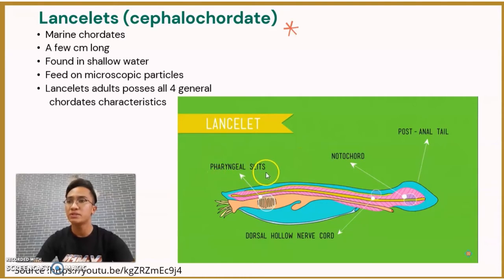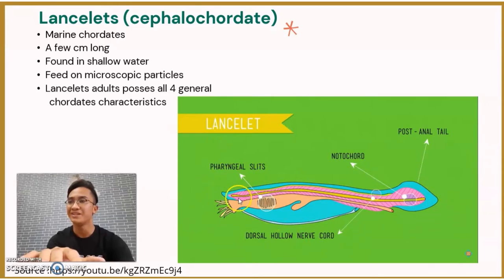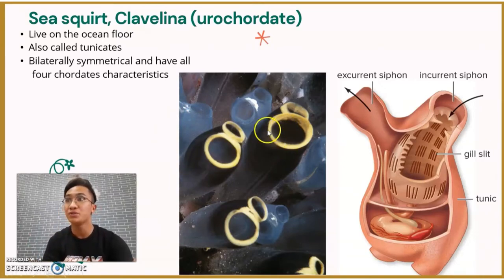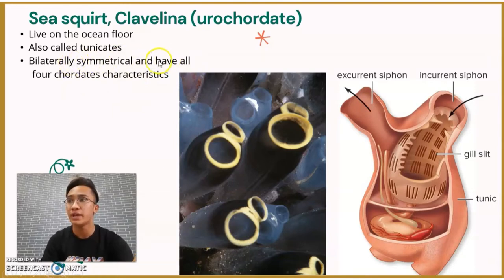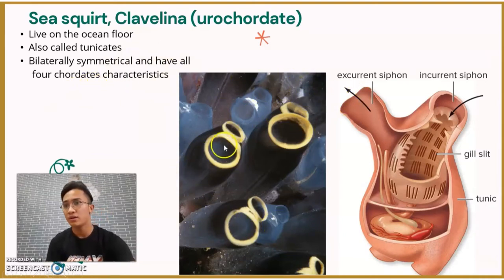As you can see in the diagram, an adult lancelet possesses all of the basic characteristics: the pharyngeal pouches, the notochord, the post-anal tail, and the dorsal tubular nerve cord. For the sea squirt, also called Clavelina, it is a type of urochordate also known as a tunicate. It lives on the ocean floor and also possesses all four chordate characteristics.